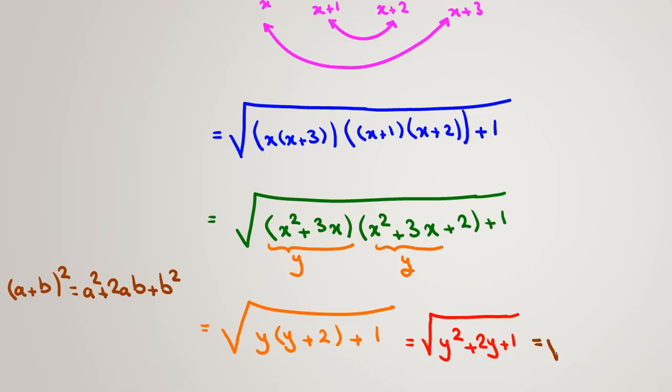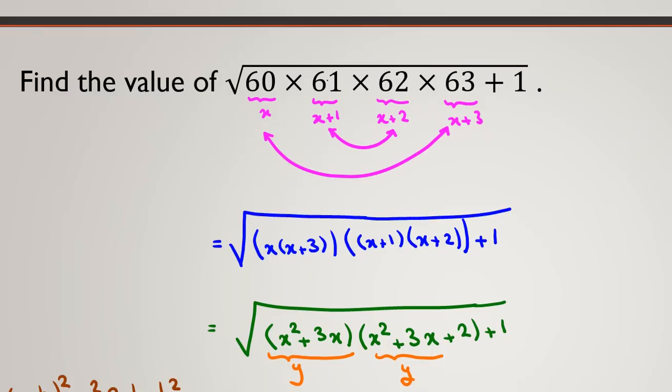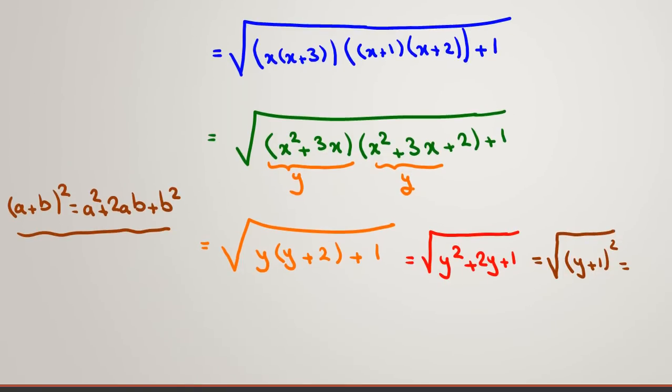So, here, we can say, by the definition of this identity, we can say it is y plus 1 squared. Because y squared plus 2y plus 1. And because we know y is positive, because x is positive. x was 60. So x is positive. Obviously, y is positive. So it will be y plus 1.